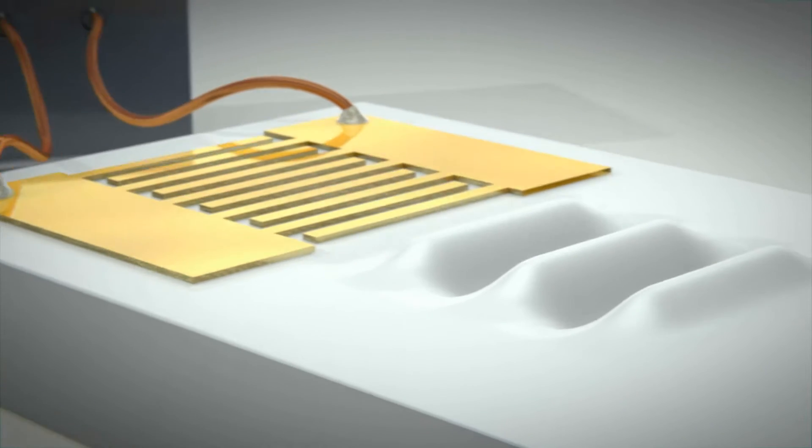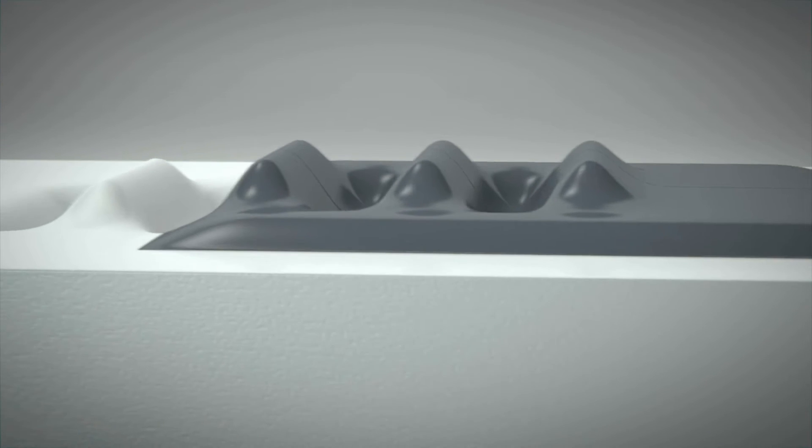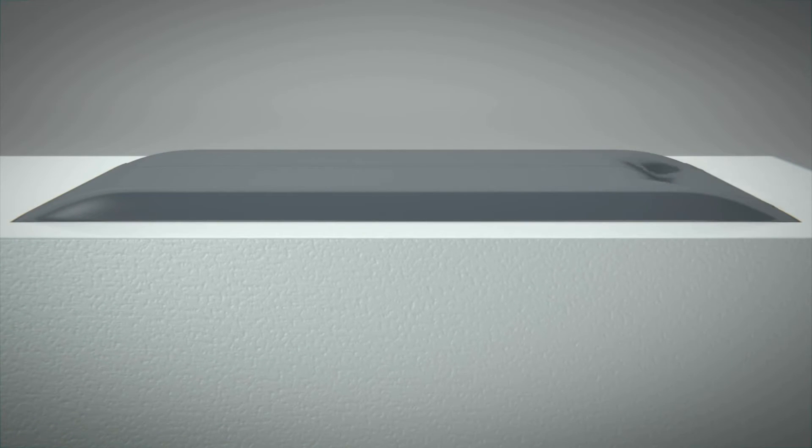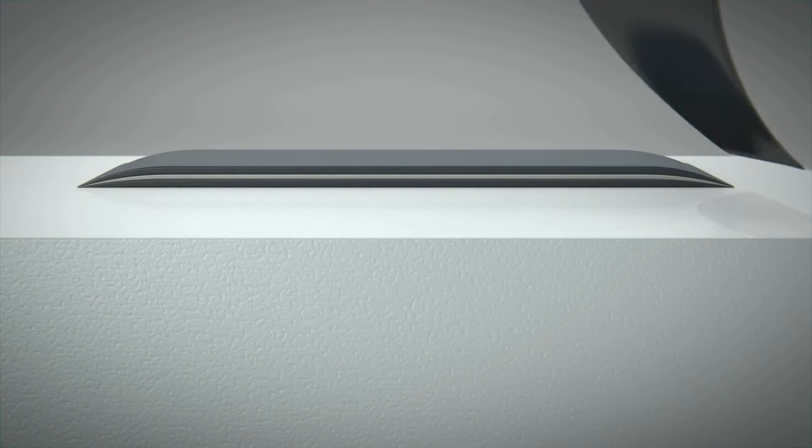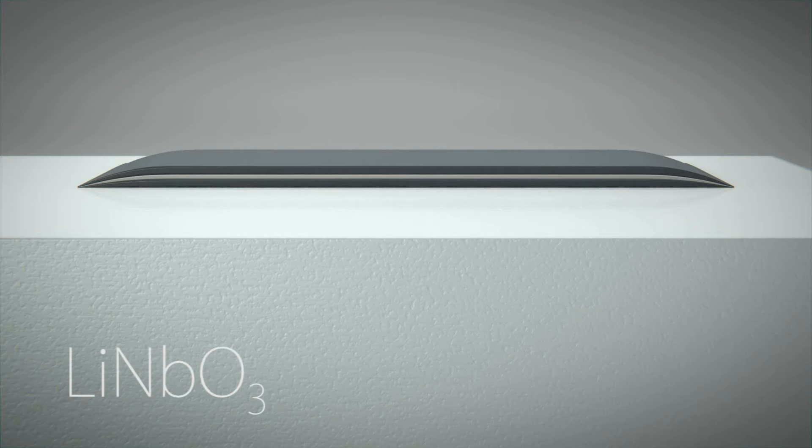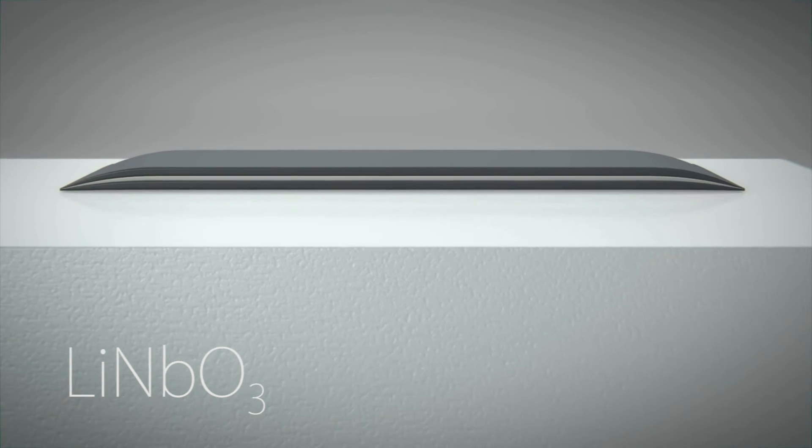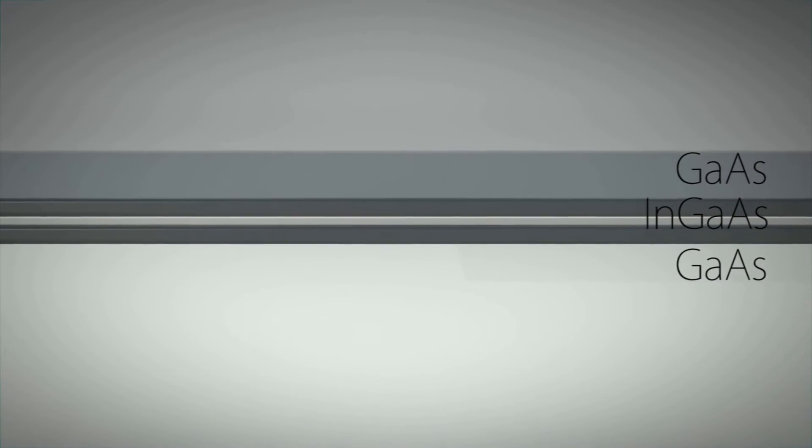A comb of electrodes generates a surface acoustic wave which travels all the way to a semiconductor film. The layer is composed of two different materials to confine carriers in the center where all the physics happens.